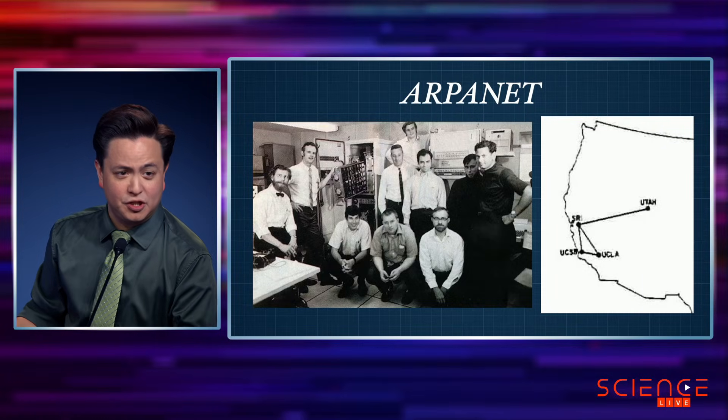The internet is one of those things that is world-changing, and to really understand how it came to be we have to jump all the way back to the 1950s and 60s. The Department of Defense put together a plan to make a network of computers that would be able to communicate and share data between each other. They called it ARPANET.